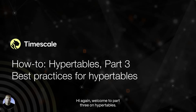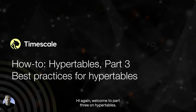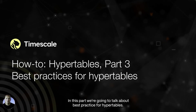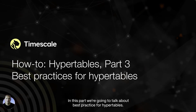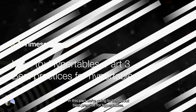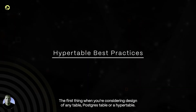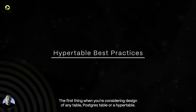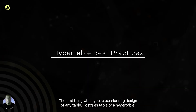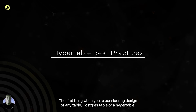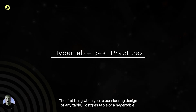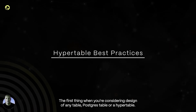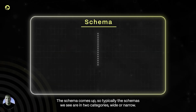Hi again, welcome to part three on hyper tables. In this part we're going to talk about best practices for hyper tables. The first thing when you're considering design of any table — a Postgres table or a hyper table — is the schema.